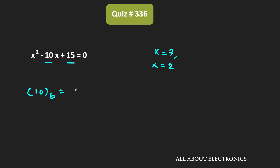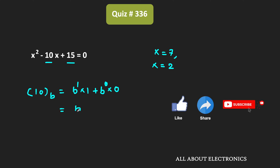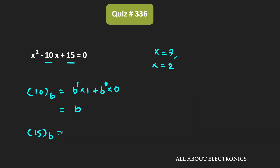The decimal equivalent of 10 is equal to b to the power 1 times 1 plus b to the power 0 times 0, that is equal to b. Similarly, the decimal equivalent of 15 is equal to b to the power 1 times 1 plus b to the power 0 times 5, that is equal to b plus 5. So these are the decimal equivalents of the two numbers.